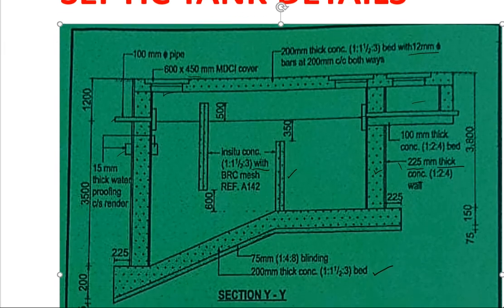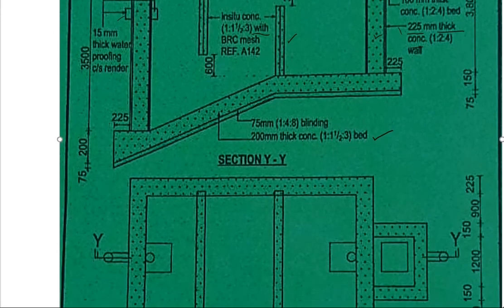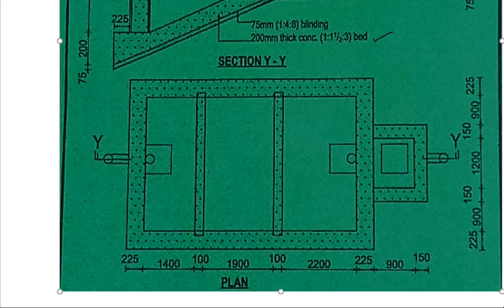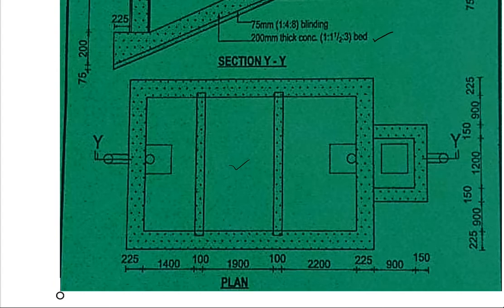That is our septic tank — that is Section XX — and down here we have the plan. This is the plan of the septic tank showing how it looks. You can see we have a pipe going in, so this is our inlet. These are the walls, the inside wall, the buffer walls, and then we have another pipe here — the manhole — and then the outlet to the exit.